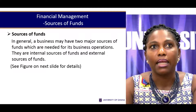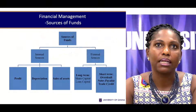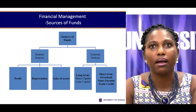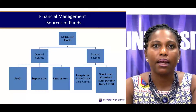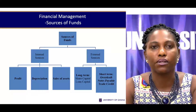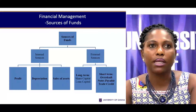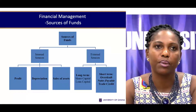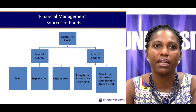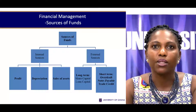There are two major sources: internal sources of funds and external sources. Internal means internal to the firm — activities that happen within the firm generate these sources of funds. External means funds coming from outside of the firm. Internal sources include profits from operations, depreciation, which is more seen as payments that would have been made if we had rented a building or a particular capital item, and the sale of assets within the firm.